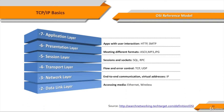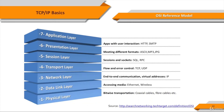Layer 2, the data link layer. This layer sets up links across the physical network, putting packets into network frames. This layer has two sub-layers: the logical link control layer and the media access control layer. Ethernet is the main data link layer in use. Layer 1, the physical layer. This layer conveys the bit stream through the network at the electrical, optical, or radio level. It provides the hardware means of sending and receiving data on a carrier network.